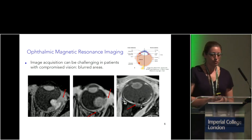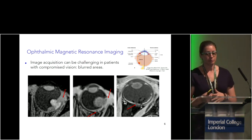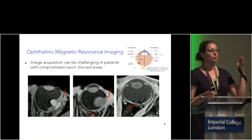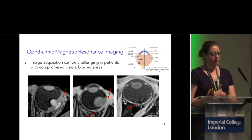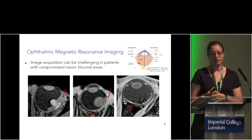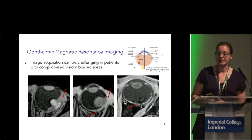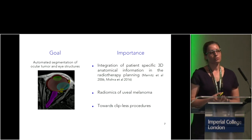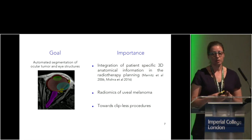Not everything is beautiful, to be honest. In children, when acquiring ocular MRI, children are asleep and there are not many motion artifacts. In adults, we ask them to fix a light during acquisition so they move as little as possible. However, these are patients with tumors, so they have problems fixating the eye. These are the kinds of motion artifacts we deal with — you see these blurry areas. Despite this, we want to go for the challenge and pursue automatic segmentation of the ocular tumor and eye structures.